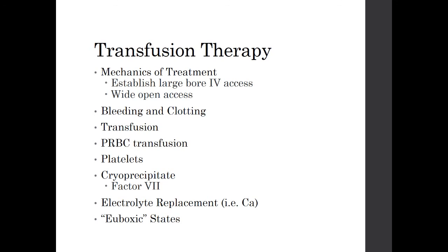Transfusion therapy requires established large-bore IV access — 16 or 18 gauge or central line — with wide-open access. Think about bleeding and clotting when transfusing. Consider packed red blood cell transfusion; if greater than 3 to 4 packed cells are given, we are obligated to give platelets. For large amounts of blood loss, consider cryoprecipitate or factor VII, and look at electrolyte replacement. We are shooting for euboxic states — keeping all electrolytes within normal ranges.